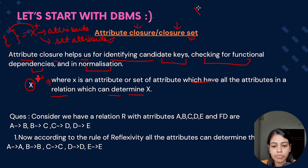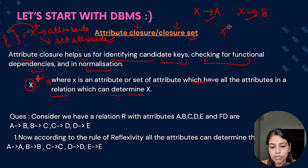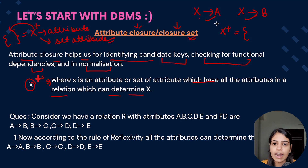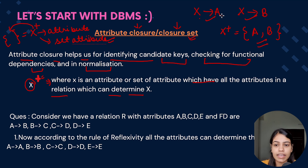For example, consider a relation where x determines a and x determines b. Since x is determining a and b, if I find the closure of x, according to the definition it should give me all the attributes which can be determined by x — that would be a and b. So x⁺ gives me all the attributes present in the relation which can be determined by x.